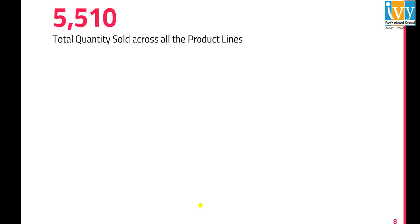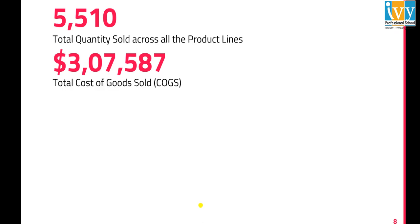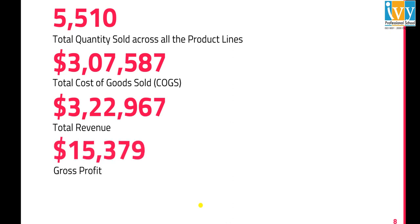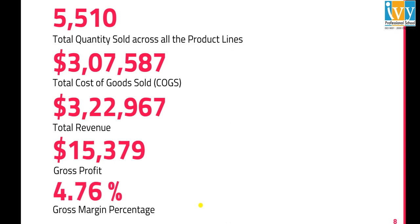The business insights derived from the dataset show 5,510 total quantity sold across all product lines, $307,587 as total cost of goods sold, $322,967 as total revenue, $15,379 as gross profit, and 4.76% as the gross margin percentage.